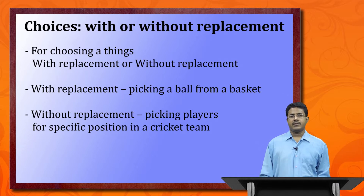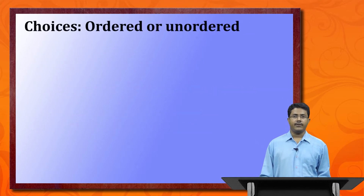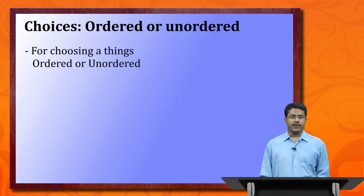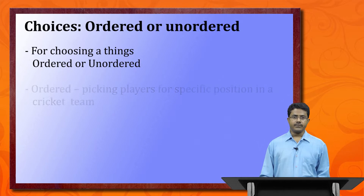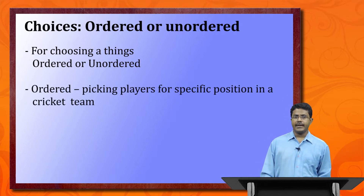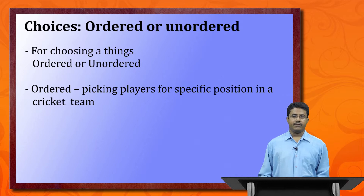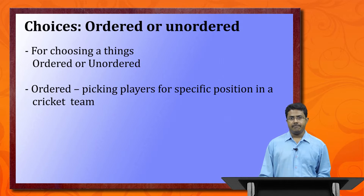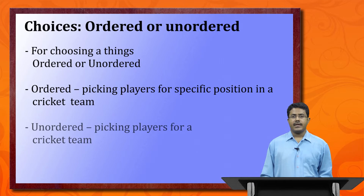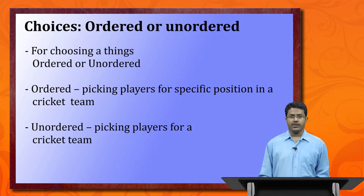Another choice is whether selections are ordered or unordered, as this changes the size of the sample space. Ordered: picking players for specific positions in a cricket team, where first-down, second-down, and bowler positions are chosen sequentially. Unordered: picking 11 players for a cricket team where only the group matters, not the order of selection.